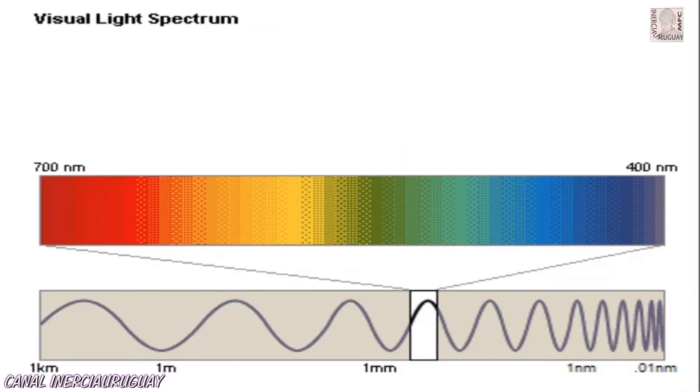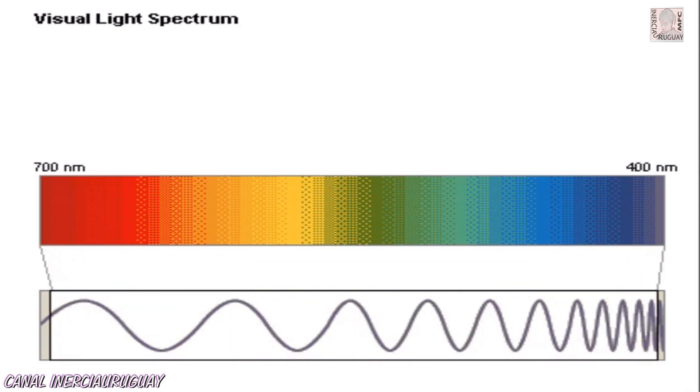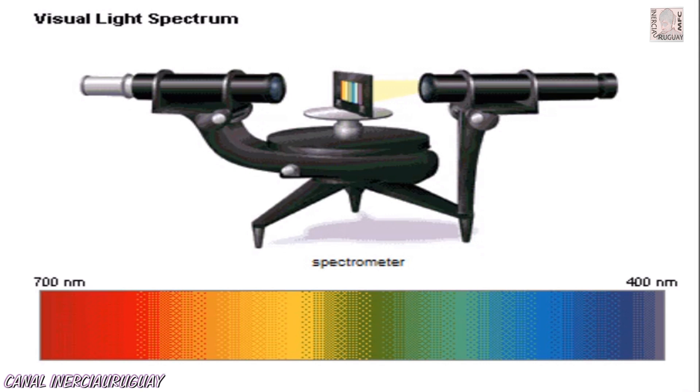Each color of visible light corresponds to a particular frequency in the spectrum. One way scientists measure this frequency is through the use of a spectrometer.